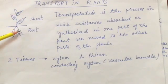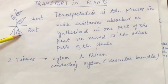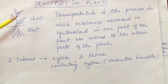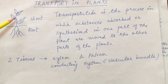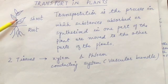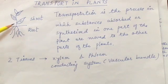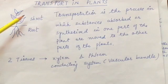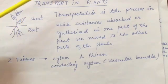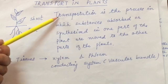You all know that the roots absorb water and minerals and transport them to the various parts of the plant. The leaves prepare food by the process of photosynthesis. The food is in the form of glucose, and this glucose is then transported to all the various parts of the plant. So we understand that transportation in plants is very important. Now let us define transportation.